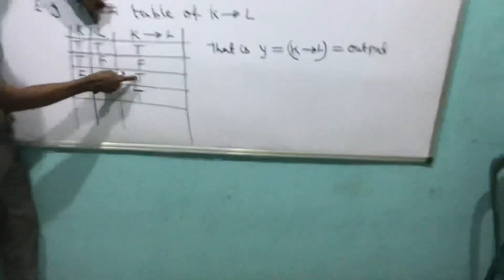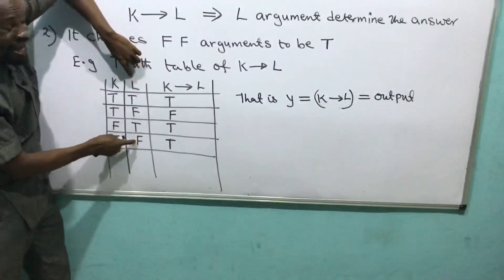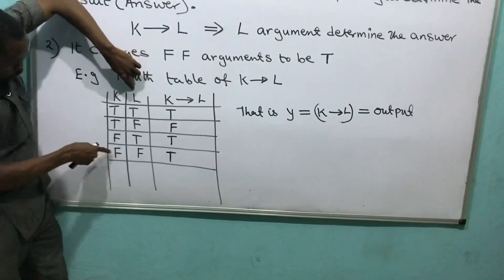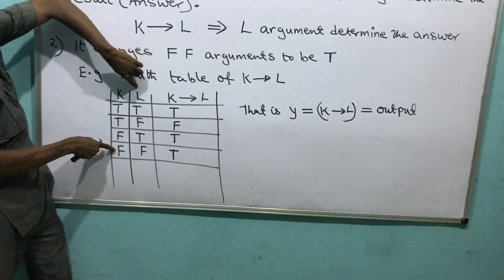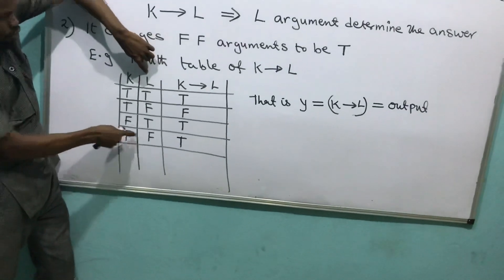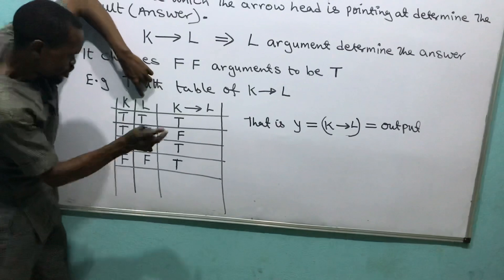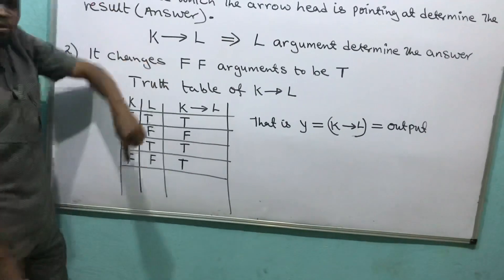What is the value of L here? False. And the value of K is also false. Two of them have said false-false, so the single implication says no — you cannot be false. This is going to be the word true. Have you seen how it goes?